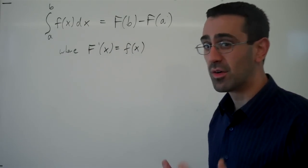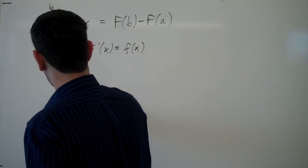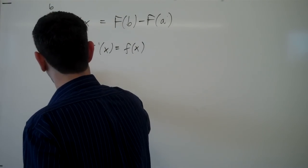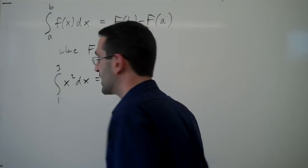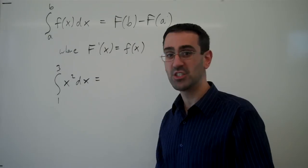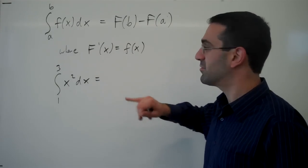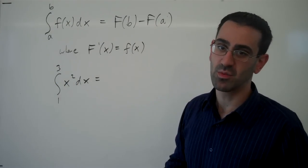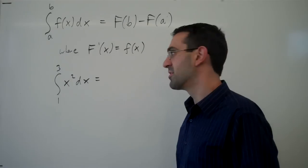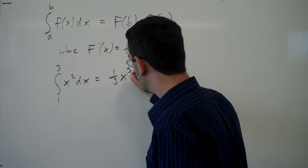And this ends up being really handy. Let's see why. Because if we need to evaluate something like the integral from 1 to 3 of x squared dx, rather than having to figure out that this is an area, or setting up a summation and taking the limit of it, this says I just need to know a function whose derivative is x squared. I need an anti-derivative. And I know that a function that does that is one-third x cubed.